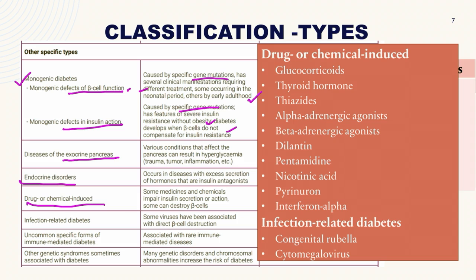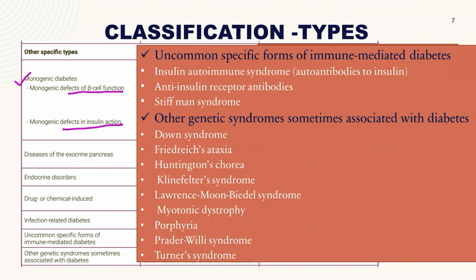Drug- or chemical-induced diabetes involves chemicals interfering with insulin secretion or action, including glucocorticoids, thyroid hormone, thiazides, alpha-adrenergic agonists, beta-adrenergic agonists, dilantin, pentamidine, nicotinic acid, pyrineuron, and interferon alpha. For infection-related diabetes, congenital rubella and cytomegalovirus are the most common causes. Uncommon specific forms of immune-mediated diabetes include insulin autoimmune syndrome, anti-insulin receptor antibodies, and stiff man syndrome.